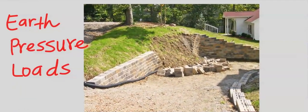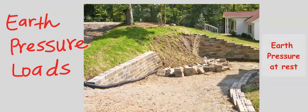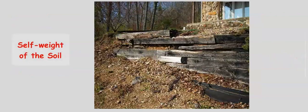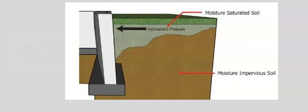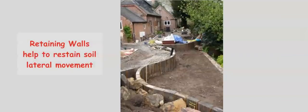Earth pressure loads refer to the pressure of the soil, called earth pressure at rest. Soil has self-weight and the tendency to move laterally, at times caused by moisture saturation. Retaining walls are constructed to restrict soil movement.